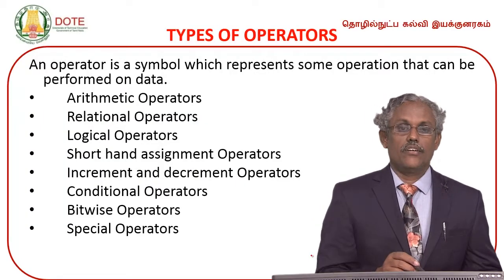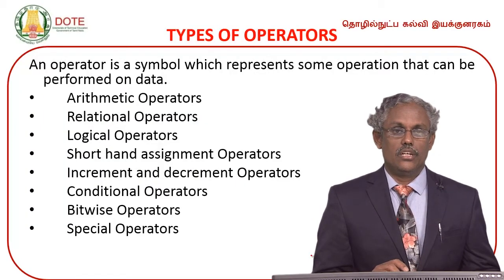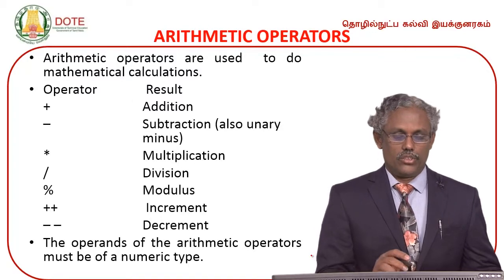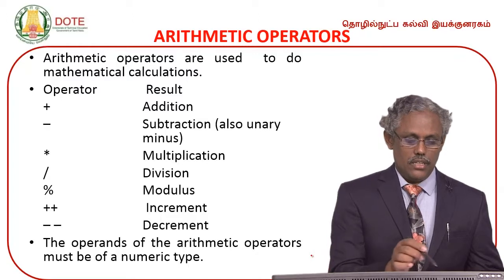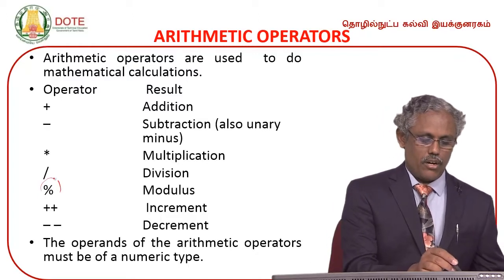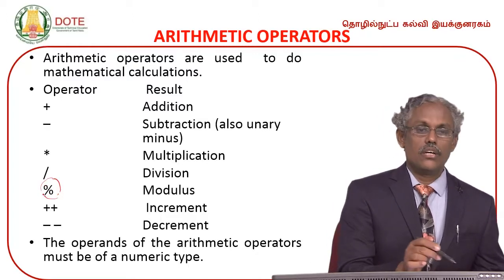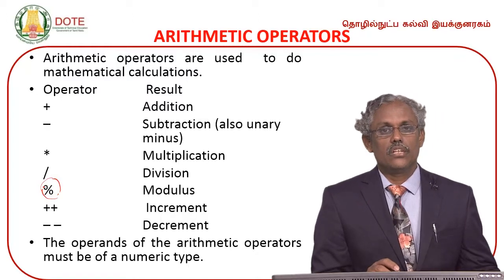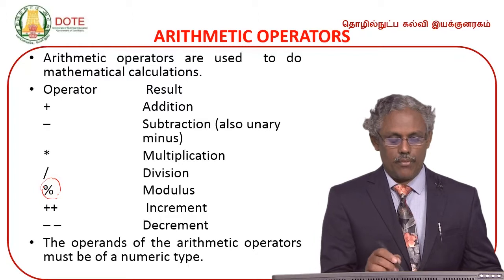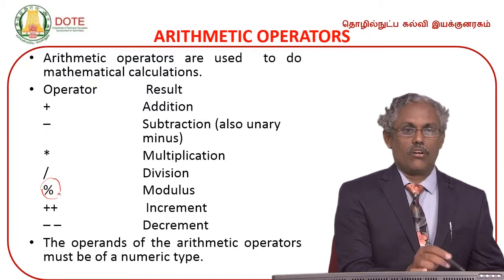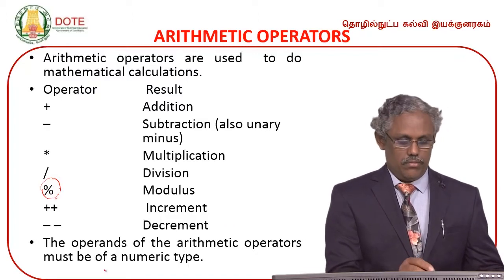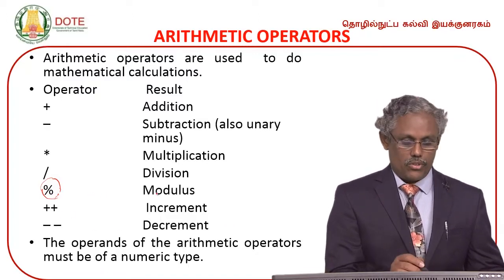These are the different types of operators. Arithmetic operators include addition, subtraction, and multiplication. The remainder operator is used with integer division — dividing one value by another gives the remainder. This is the remainder or modulus operator.